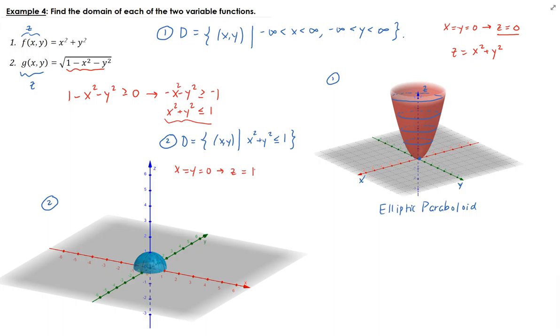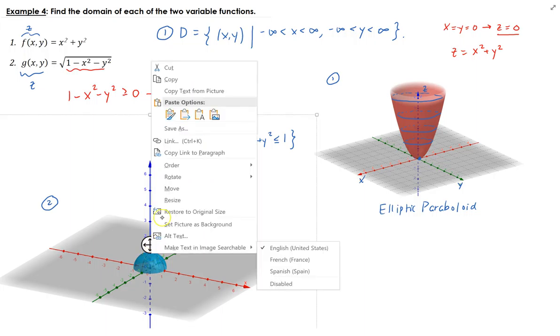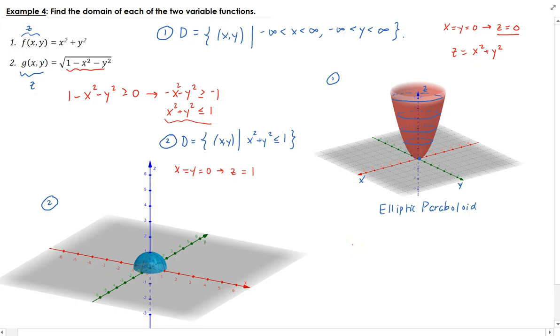So that means that's going to be just this point on top. When x and y is zero, it's going to be, yeah, z will be one. So you just get this point right here.